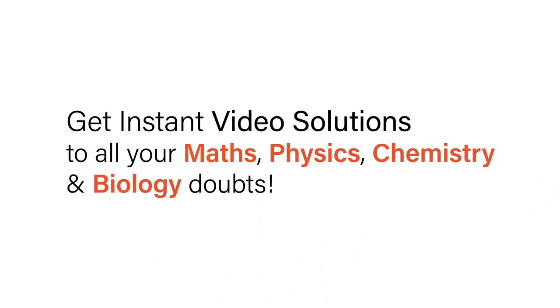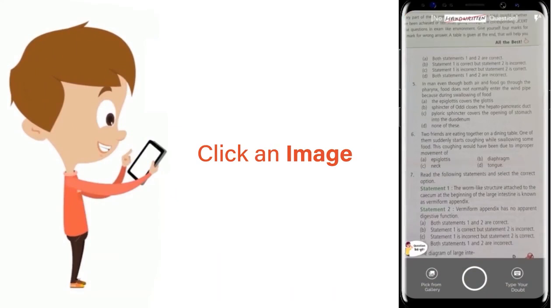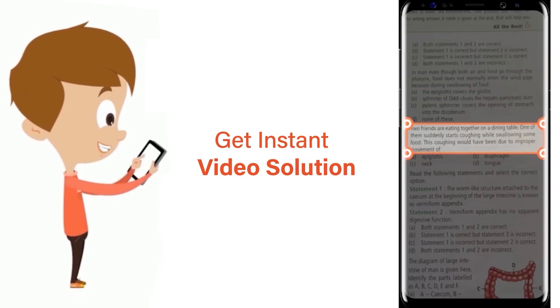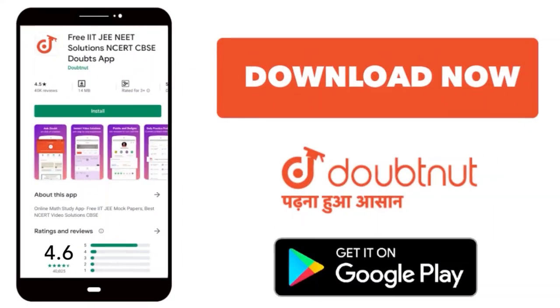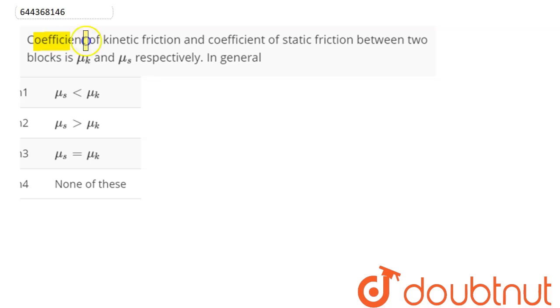With Doubtnet, get instant video solutions to all your maths, physics, chemistry and biology doubts. Just click the image of the question, crop the question, and get instant video solution. Download Doubtnet app today. Coefficient of kinetic friction and coefficient of static friction between two blocks is μ_k and μ_s respectively. In general,